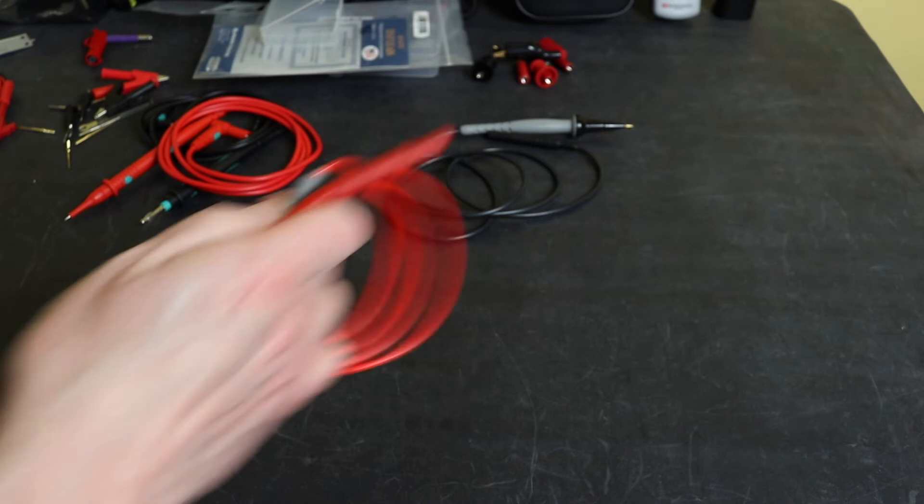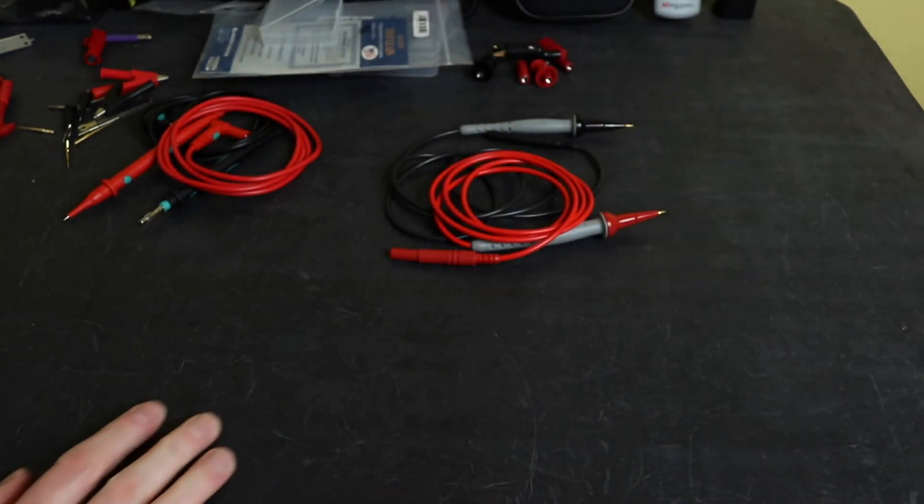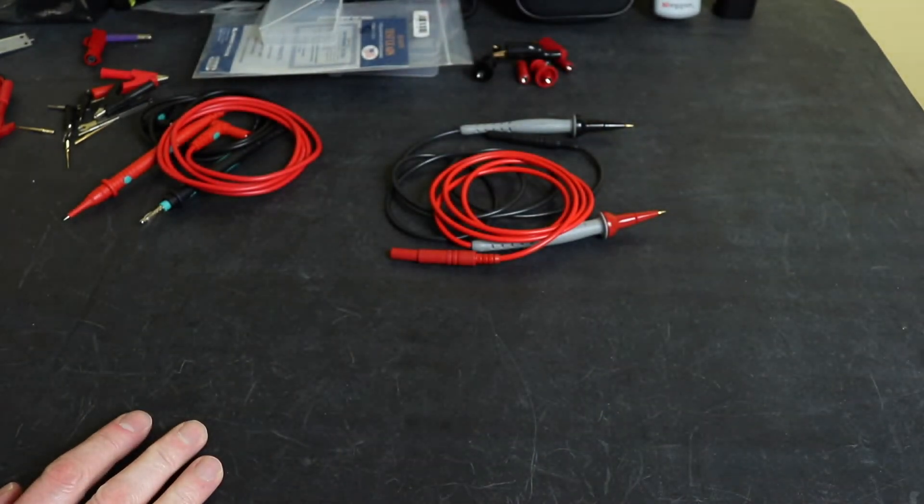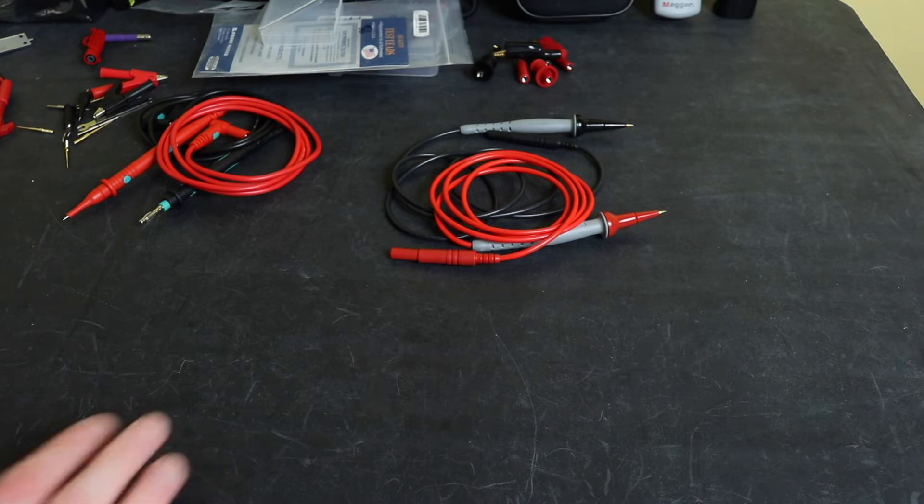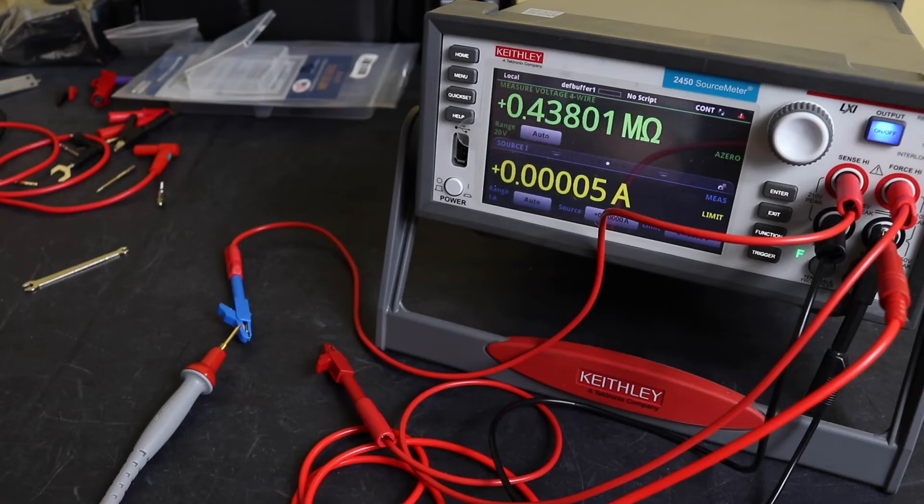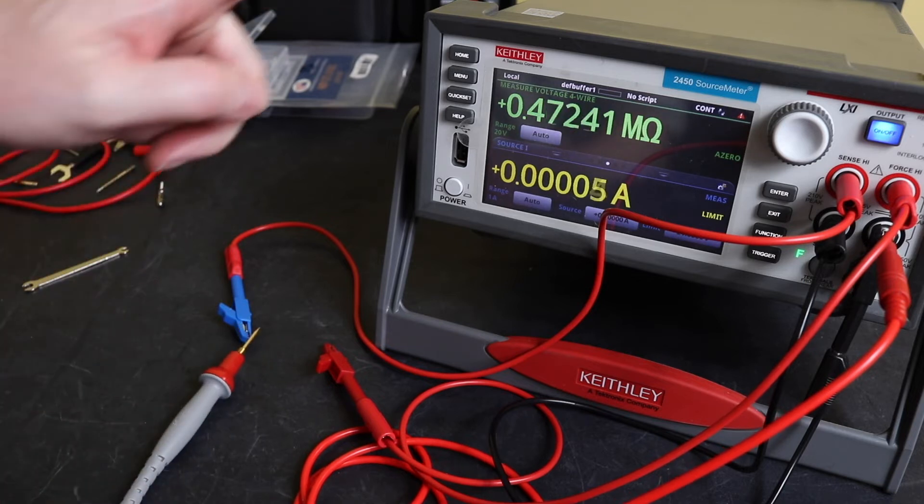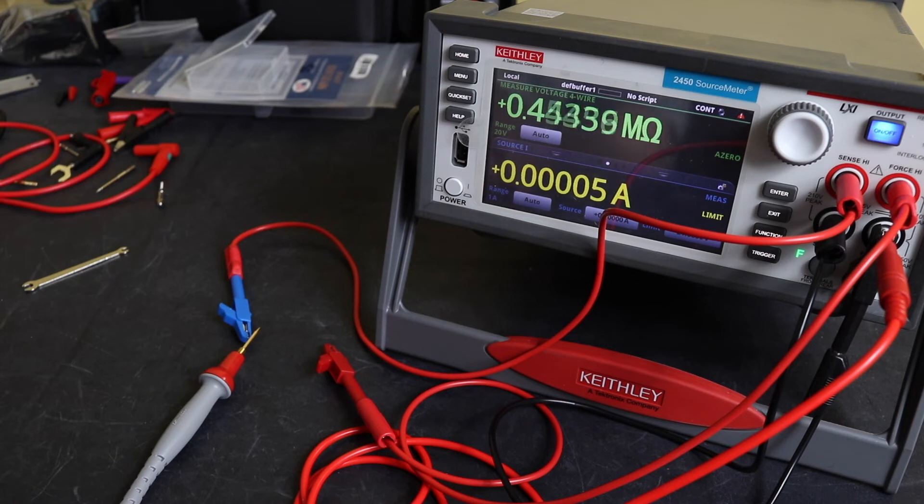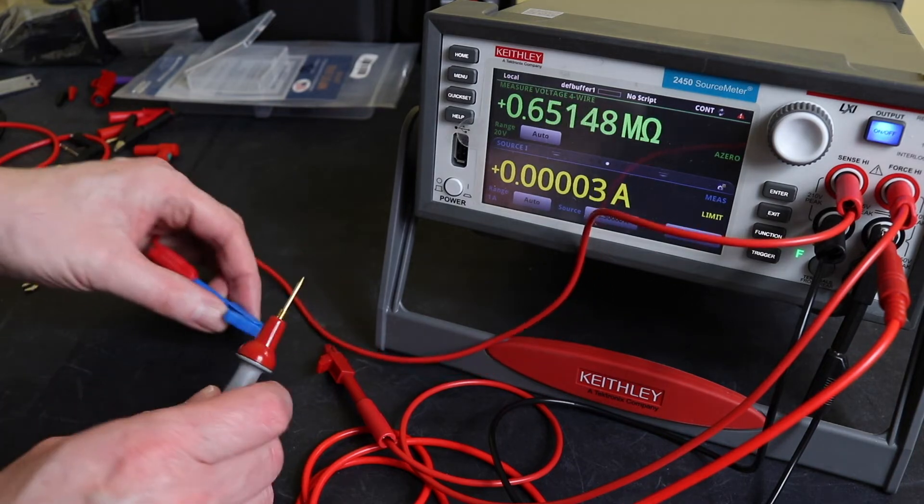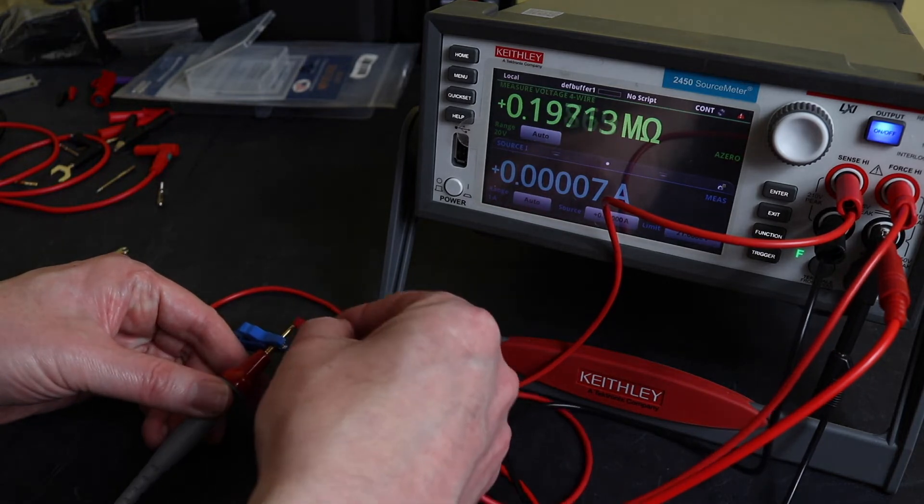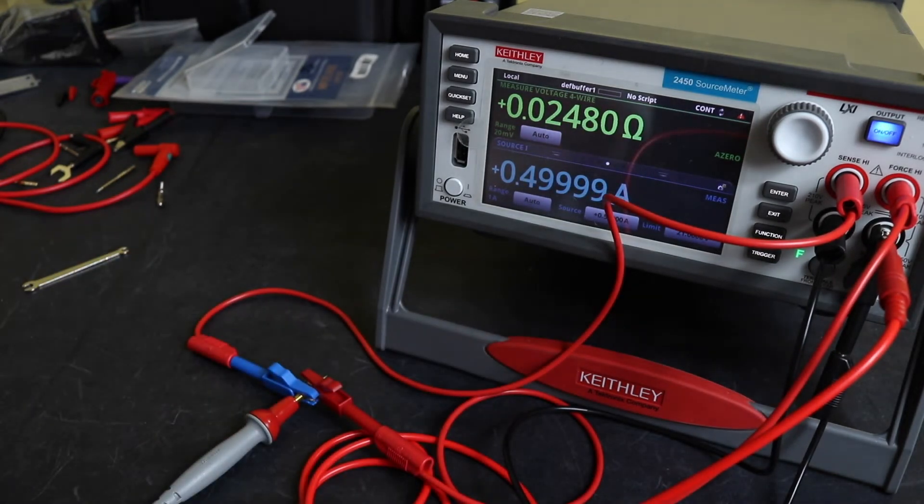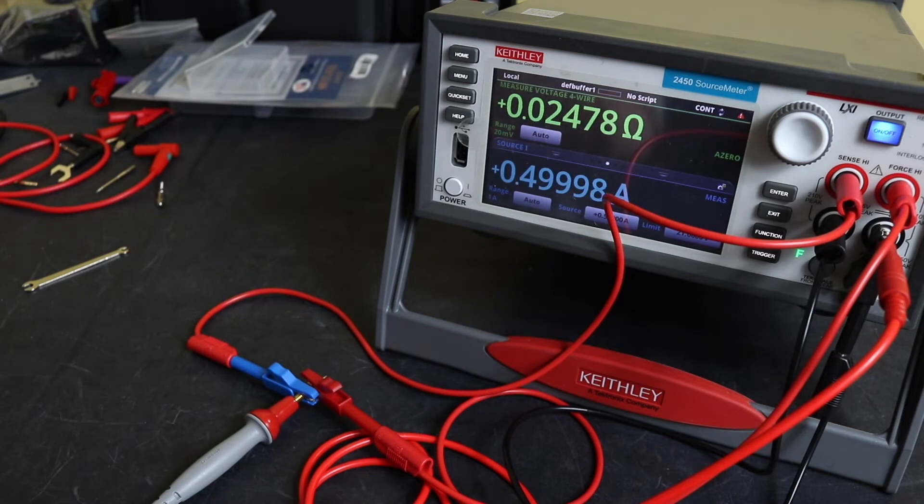I'll set up a resistance meter and make some resistance measurements on the leads to see if there's any differential between them. We're set to four wire measurement on the source meter and we're going to inject 0.05 amps, 500 milliamps, through the lead and see what resistance values we get.